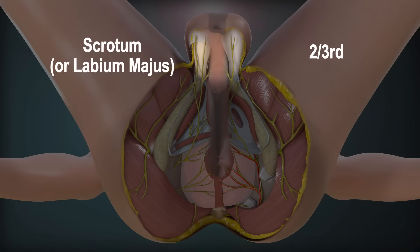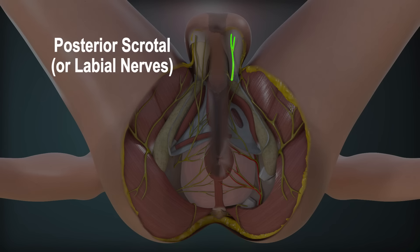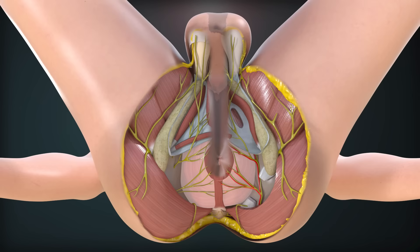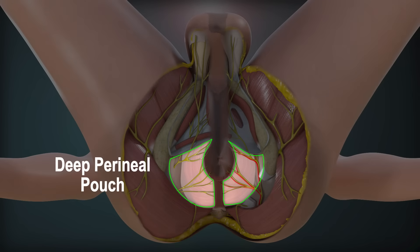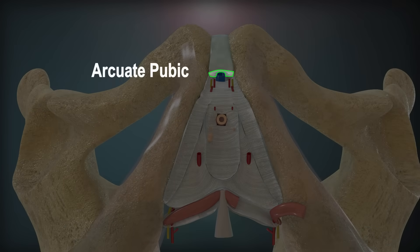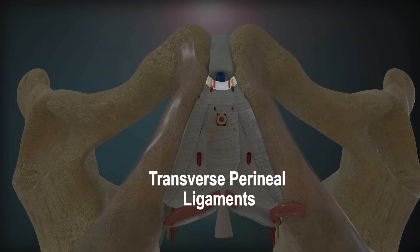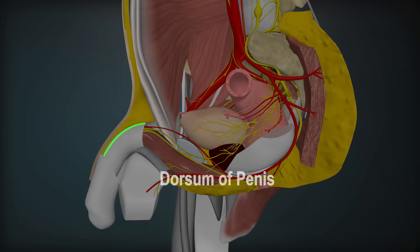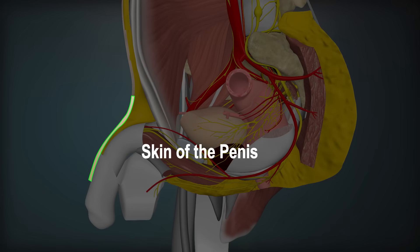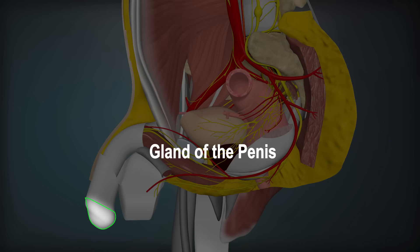Superficial and deep transverse perineal nerves, ischiocavernosus and bulbospongiosus. Its superficial branch or branches innervate the posterior two-thirds of the scrotum or labium majus as the posterior scrotal or labial nerves. The dorsal nerve of penis or clitoris traverses the deep perineal pouch, then passes through a gap between the arcuate pubic and transverse perineal ligaments to reach the dorsum of penis, where it innervates the skin of the body and glans of the penis.